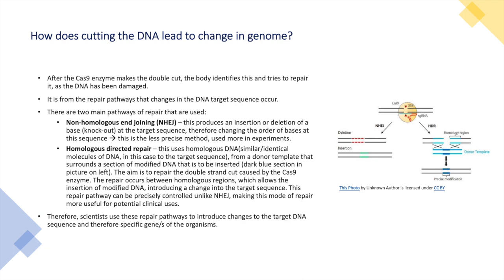The next method of repair is known as homologous directed repair. This uses homologous DNA, which are similar-to-identical molecules of DNA, in this case to the target sequence. From a donor template that surrounds a section of the modified DNA to be inserted — shown as the dark blue section on the right.